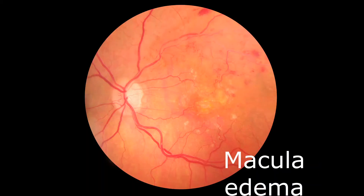The second cause of blindness in diabetics is macular edema. The macula is the part of the retina where most of the vision fibers are concentrated and where we get most of our vision. What happens here is that the macula gets swelling and edema because of leakage from the damaged blood vessels of the retina, and this interferes with the clarity of vision.